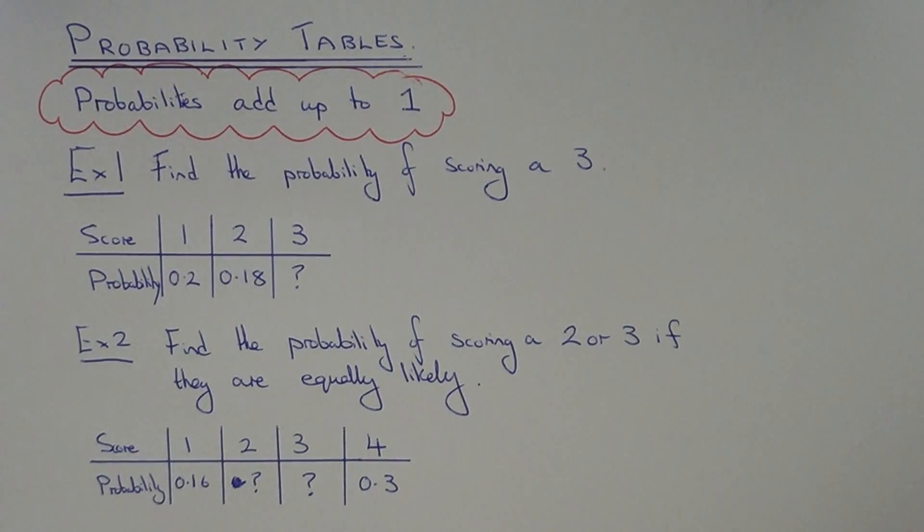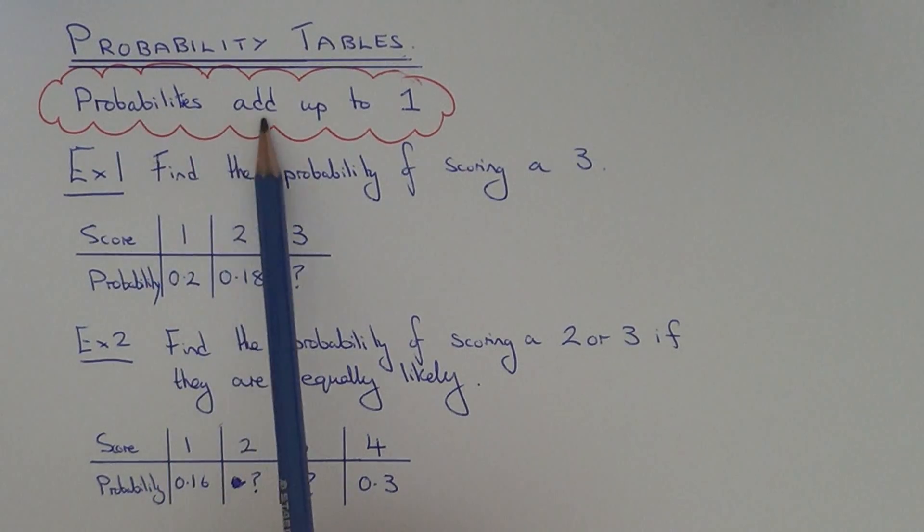Today I'm going to show you how to work out the missing probability in a probability table. To do this, all you need to do is add up the probabilities in the table, and once you've added them up, you need to subtract that answer away from 1. This is because probabilities add up to 1.